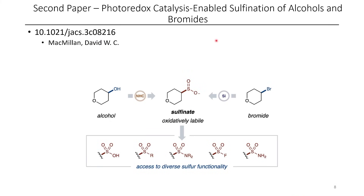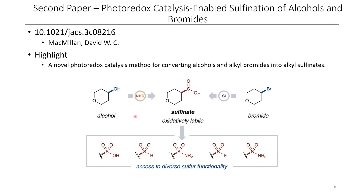The second paper for today involves the use of photoredox catalysis to produce sulfonates from alcohols as well as bromides. This chemistry utilizes the Macmillan group's NHC-mediated carbon radical formation, where an alcohol group is readily converted into the corresponding radical, which can then trap sulfur dioxide. Alternatively, they can use their silane chemistry to produce a carbon-centered radical as well, and this chemistry has been used by a number of groups in the past.